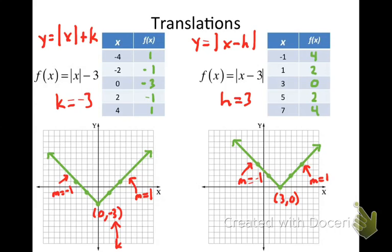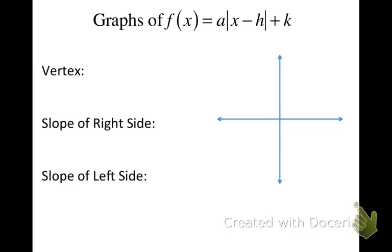Now I'd like to put together an equation with A, H, and K all in it to make sure you understand the effects of each variable. The vertex is determined by H and K — H is the x-coordinate and K is always the y-coordinate for the vertex. The slope of the right side is always equal to A, and the slope of the left side is always the opposite.